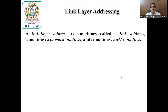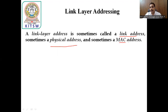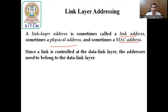A link layer address is sometimes called a link address, physical address, or MAC address. In the link layer address, we can use link address, physical address, or MAC address. Since a link is controlled at the data link layer, the addresses need to belong to the data link layer. These addresses are used in the data link layer — that is why we call this the link layer address.